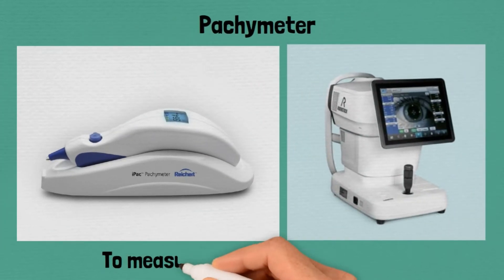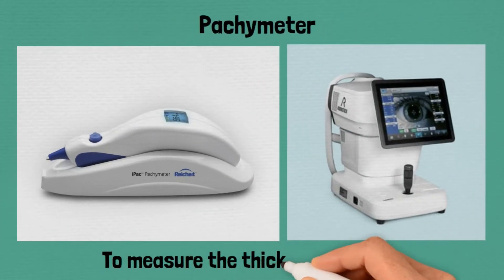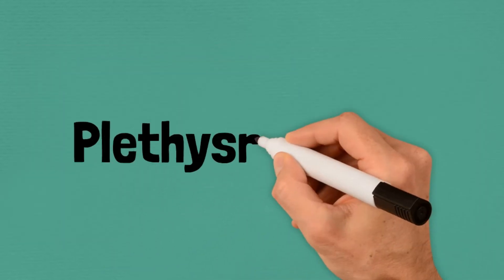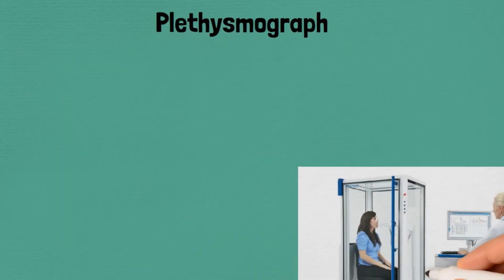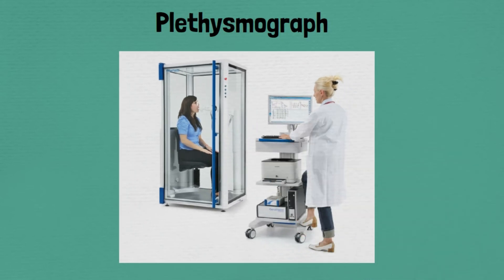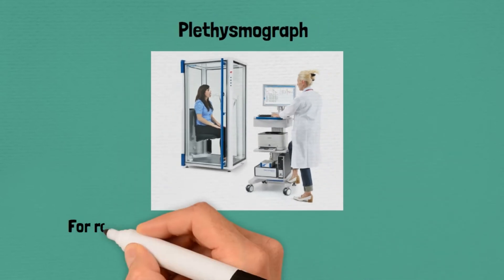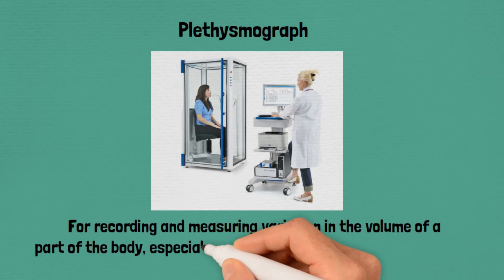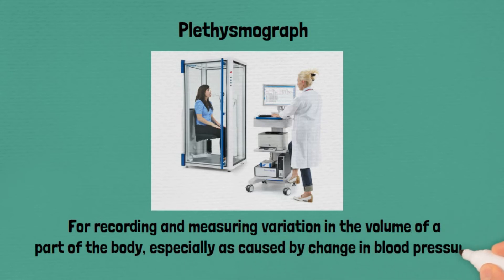Pachymeter, used to measure the thickness of the eye cornea. Plethysmograph, used for recording and measuring variation in the volume of a part of the body, especially as caused by changes in blood pressure.